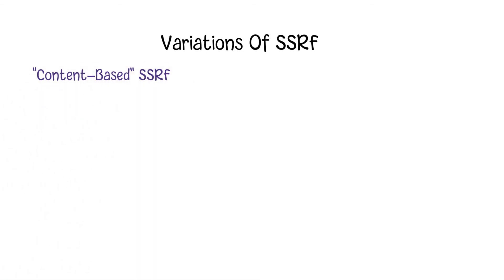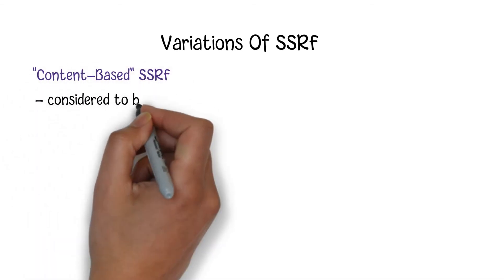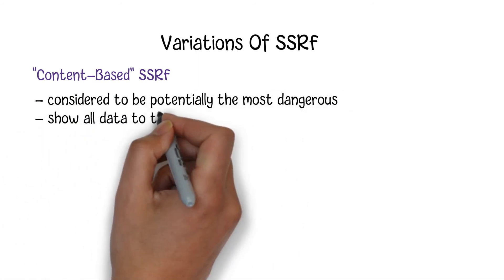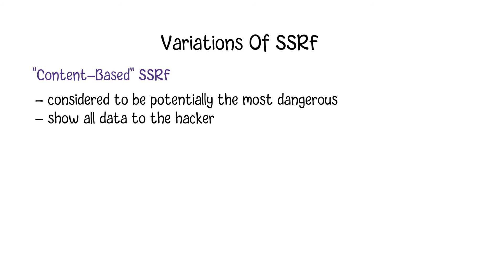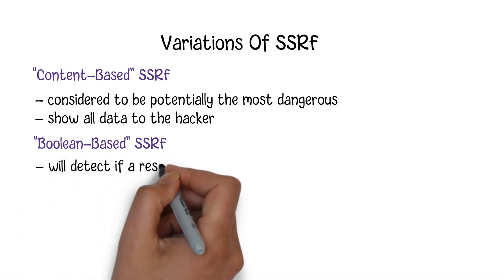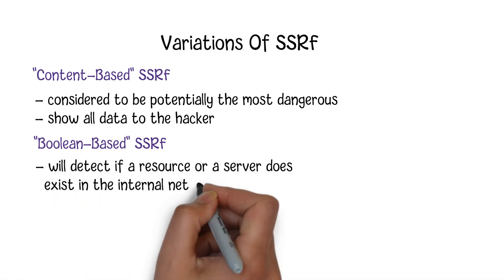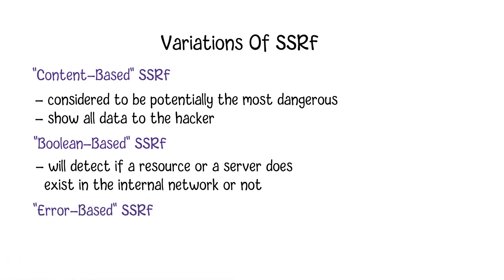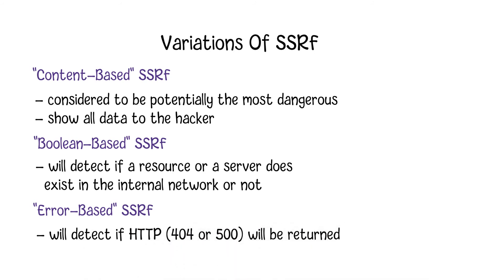The previous SSRF example shows how a hacker can obtain secret data via unauthorized access. Since the attacker retrieves actual content, these attacks are categorized as content-based SSRF attacks, considered potentially the most dangerous. Apart from that, there are other types which do not retrieve exact data but instead gather information about the internal network via redirections. A boolean-based SSRF detects whether a resource or server exists in the internal network. An error-based SSRF detects whether HTTP 404 or 500 errors are returned when accessing services, determining if those resources exist. Although these variations do not provide specific data, they give hackers clues about the topology of the internal network.